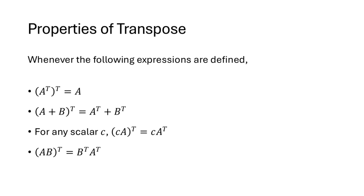Transpose has some nice algebraic properties. If we transpose a transpose, we get back to the same matrix we started with. If we add two matrices and then transpose, that's the same as transposing each matrix and then adding. A scalar can be multiplied either before or after the transpose. And then there's the final property showing how transpose interacts with matrix multiplication: (AB)ᵀ equals BᵀAᵀ. This may seem strange — you might wonder why it isn't AᵀBᵀ.